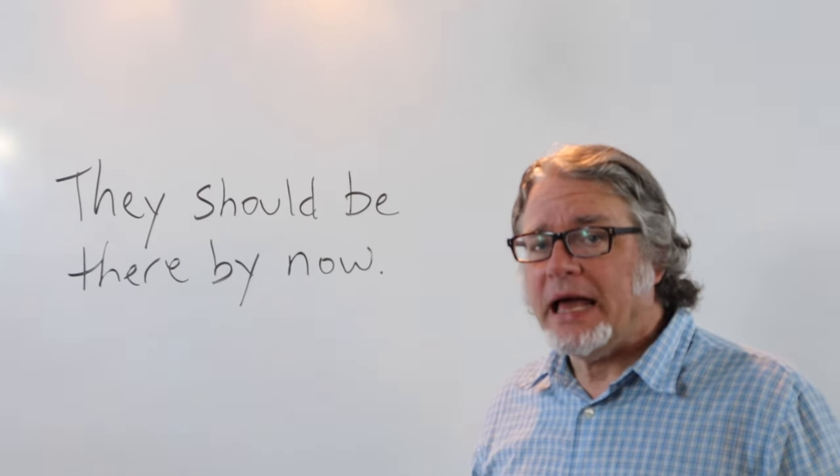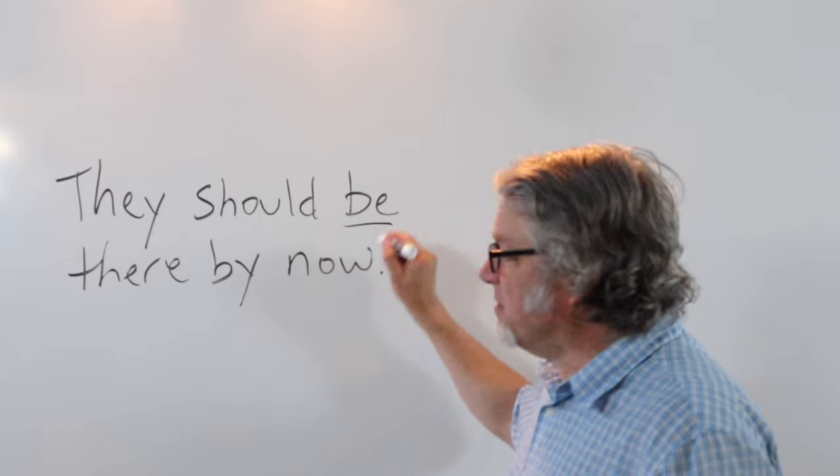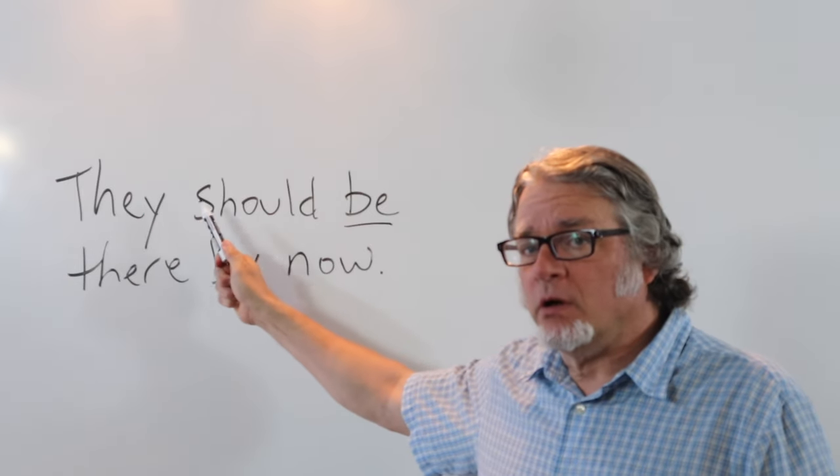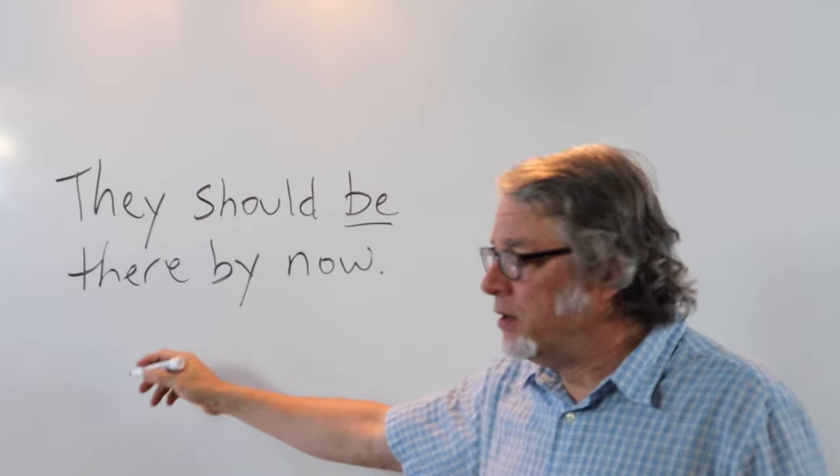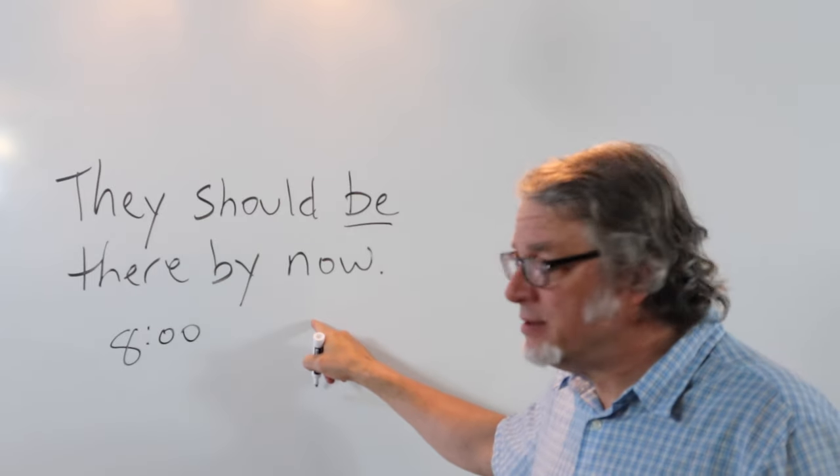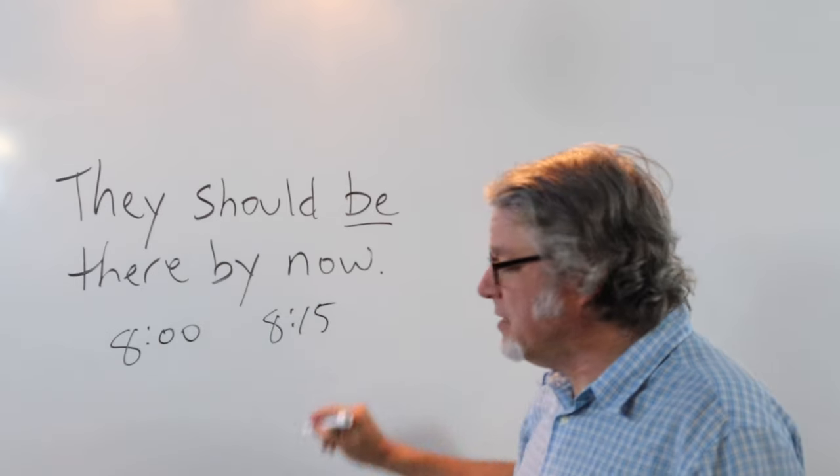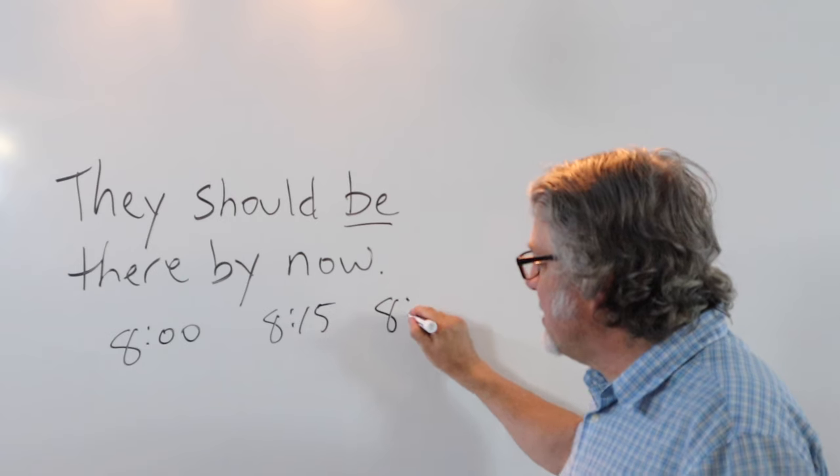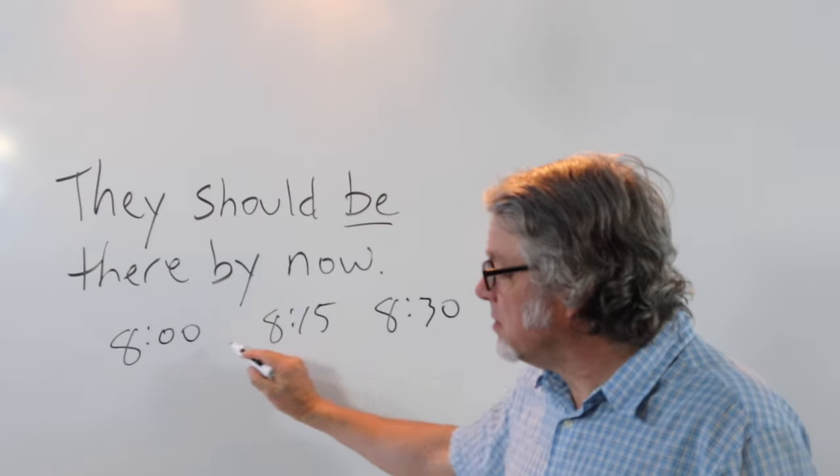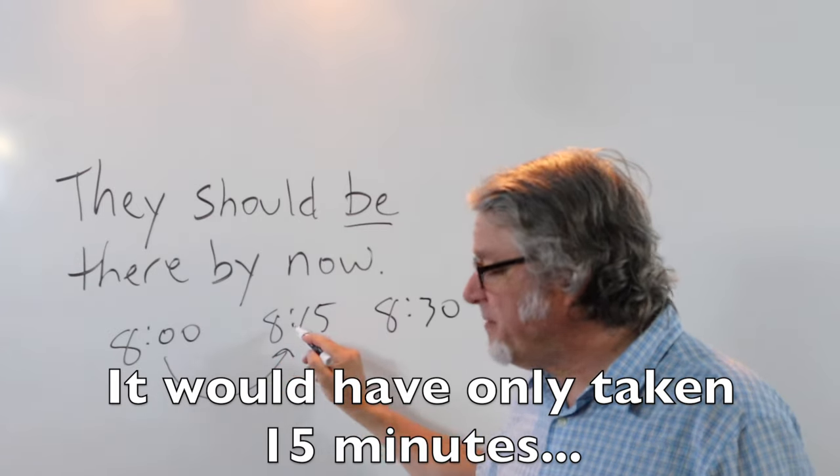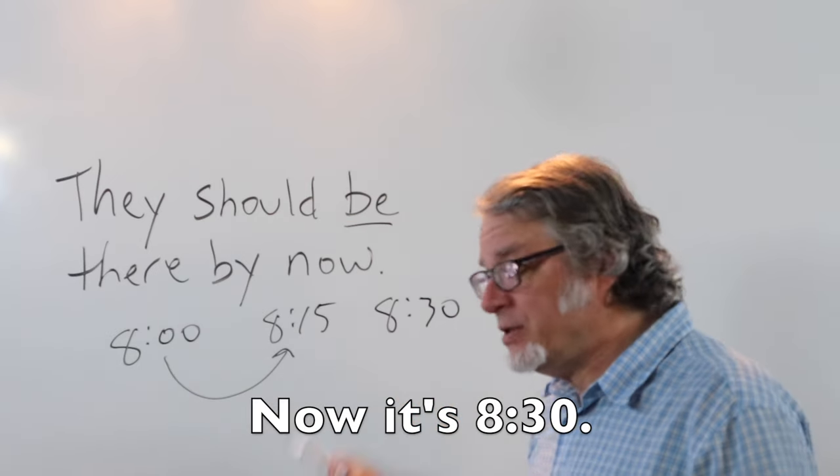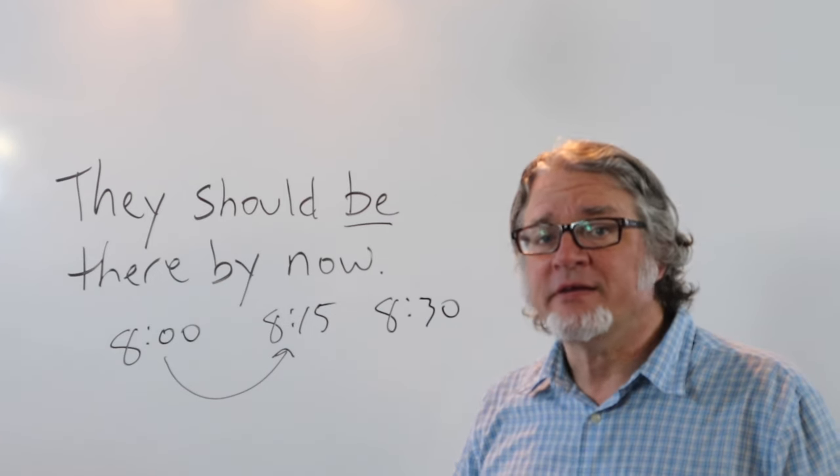They should be there by now. Here's the main verb and here's the subject. This could represent people traveling or it could be the existence of a thing. Let's say someone left a place at 8 o'clock and was expected to be there by 8:15 and now it's 8:30. The expectation is that they should be there by now. It would have only taken 15 minutes to go from start to finish and now it's 8:30, so they should be there by now.